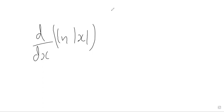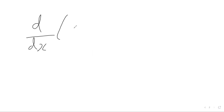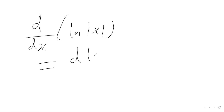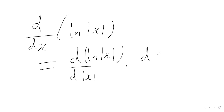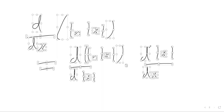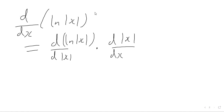So to do this, it's going to be a chain rule problem. We differentiate the natural log of the modulus of x with respect to the modulus of x, and then multiply that by the derivative of the modulus of x with respect to x. We know that differentiating the natural logarithm gives us one over the variable, so here that must be just one over the modulus of x. That's the first part of the derivative done.